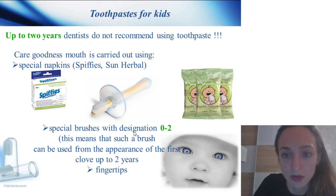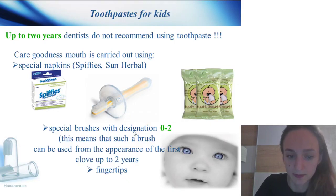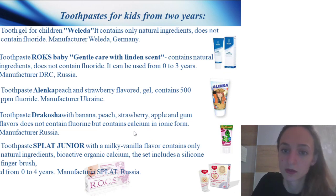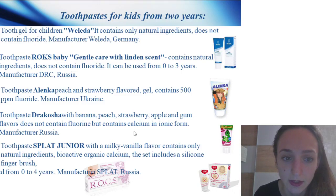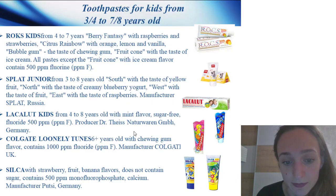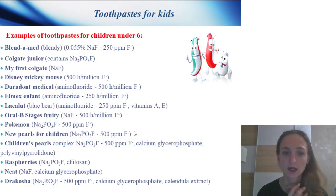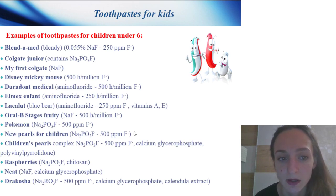Toothpaste for kids up to two years: dentists do not recommend using toothpaste; care for the mouth is using special napkins and special brushes with designation 0+. From two years: examples include Vileda, Rocs Baby, Alenka, Dracosha, and Splat Junior. From three to four and seven to eight years: Rocs Kids, Aquarelle Junior, Lacalut Kids, Colgate Looney Tunes 6+, and Silca. From age six: Blendamed, Colgate Junior, My First Colgate.